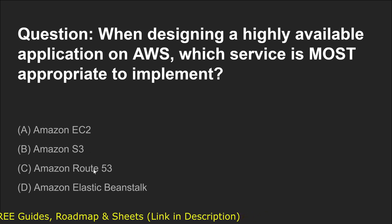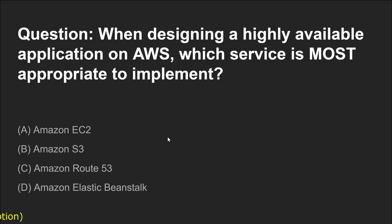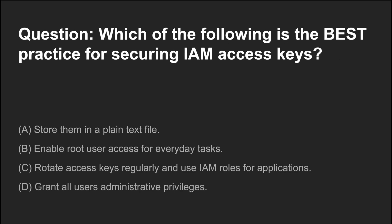Amazon Route 53 is a highly available DNS service that can distribute traffic across multiple healthy instances in case of any failure, ensuring your application stays up and running. Amazon Elastic Beanstalk simplifies deployment but doesn't inherently provide high availability features. So the correct answer for this question is Route 53, option number three.